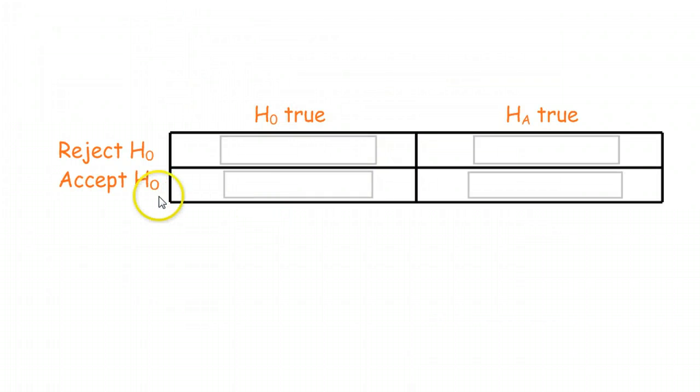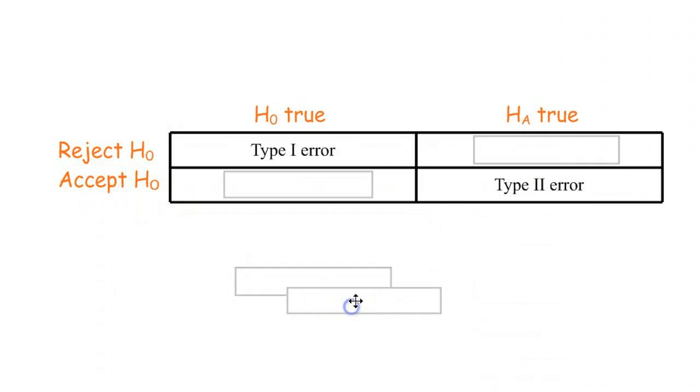Last way is just looking at a simple little grid here. If the null is true, and you reject, then you made a mistake. Type I error. If the alternative is true, and you accept it, you fail to reject it, then you made a Type II error. Otherwise, you did the right thing.